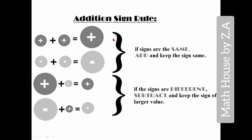Those were the two cases. Now next: if the signs are different, subtract and keep the sign of the larger value. That means if you have one positive number and one negative number, you subtract those numbers. If you have a negative value greater than the positive value, we will place the negative sign on the answer.